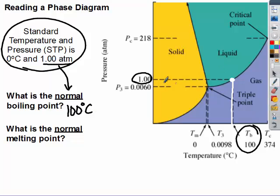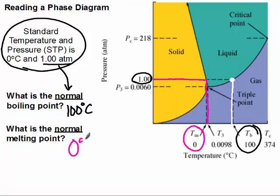Normal melting point, again 1 atm, follow it down, and that's 0 degrees Celsius.